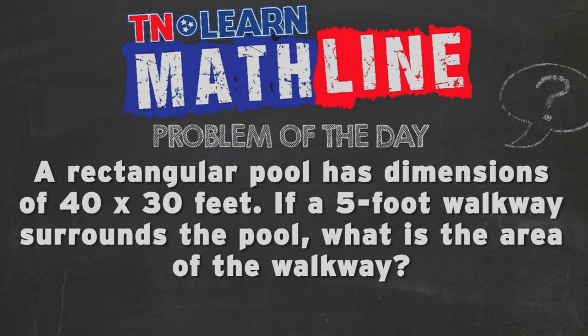A little geometry going here. A rectangular pool has dimensions of 40 by 30 feet. If a five-foot walkway surrounds the pool, what is the area of the walkway? Kind of crazy sounding problem. Let's take a look at it.